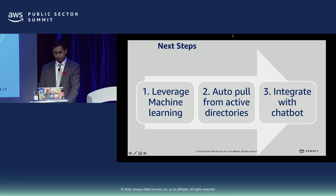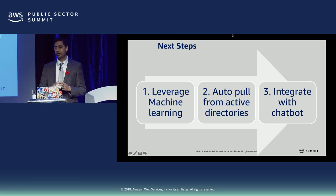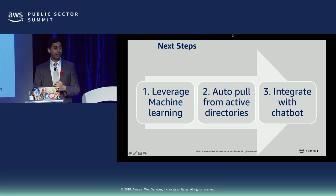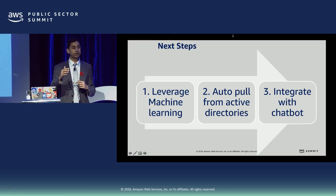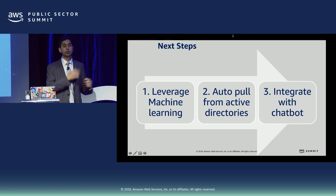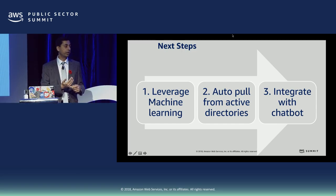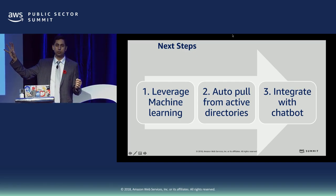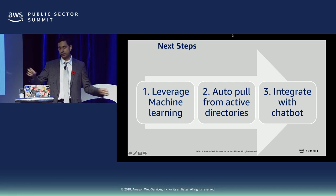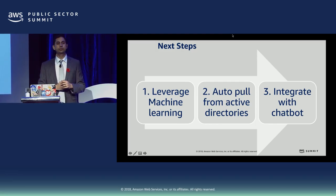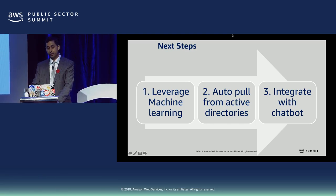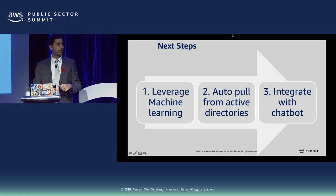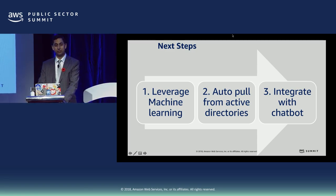In terms of next steps, we're trying to build the machine learning components, as Alex pointed out. We're creating an auto-pull from Active Directory — internal folders with confidential and private information — to compare news reports against internal briefing notes already built. We're also trying to connect with a chatbot using Amazon Lex. Thanks to the Amazon team — David, Fabrizio, Alex, and James — for providing technical guidance and helping us achieve all this within the last four months.